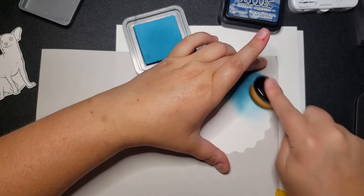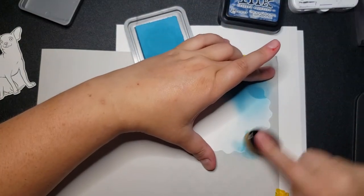The blues that I'm using - this is Broken China, Chipped Sapphire, and I think these two are gonna go really well together.